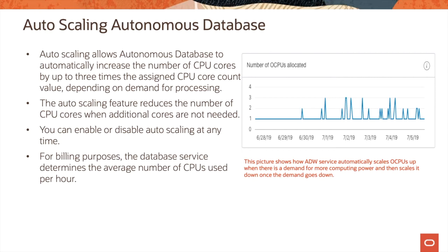For billing purposes, the database service determines the average number of CPUs used per hour. On the slide on the right side of the screen, you can see that this particular service has automatically scaled up OCPUs when there is demand for more computing power, and then scales down once the demand goes down.